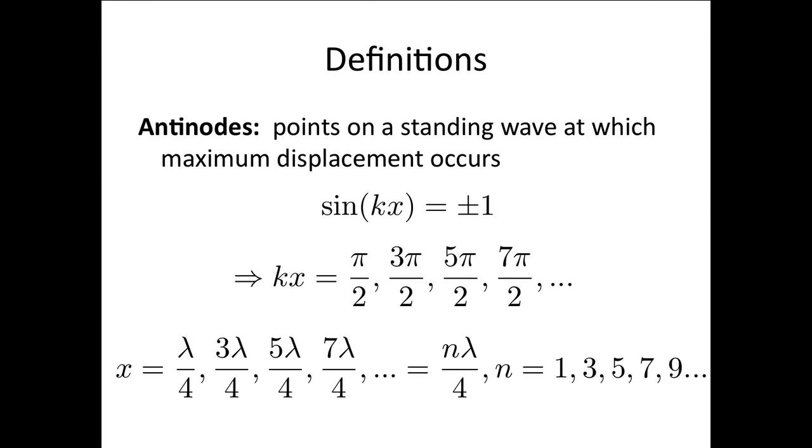Now, antinodes are the points with the maximum amplitude. So for the maximum amplitude, sin(kx) had to equal plus or minus 1, which tells us that kx must be π/2, that's 90 degrees, 3π/2, 5π/2, 7π/2, etc.